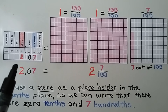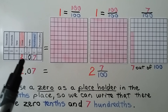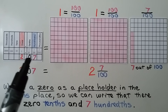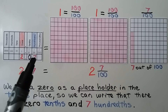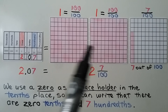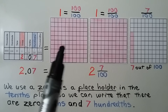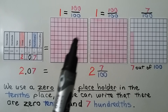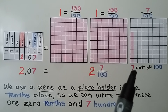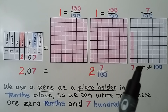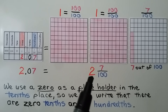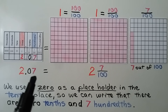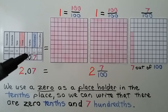In this place value chart, we can see there's a 2 in the ones place, a 0 in the tenths place, and a 7 in the hundredths place. That means we have 2 wholes — 100 out of 100 shaded — and only 7 out of 100 shaded here. We have 2 and seven hundredths. We use a 0 as a placeholder in the tenths place, so we can write that there are 0 tenths and 7 hundredths.